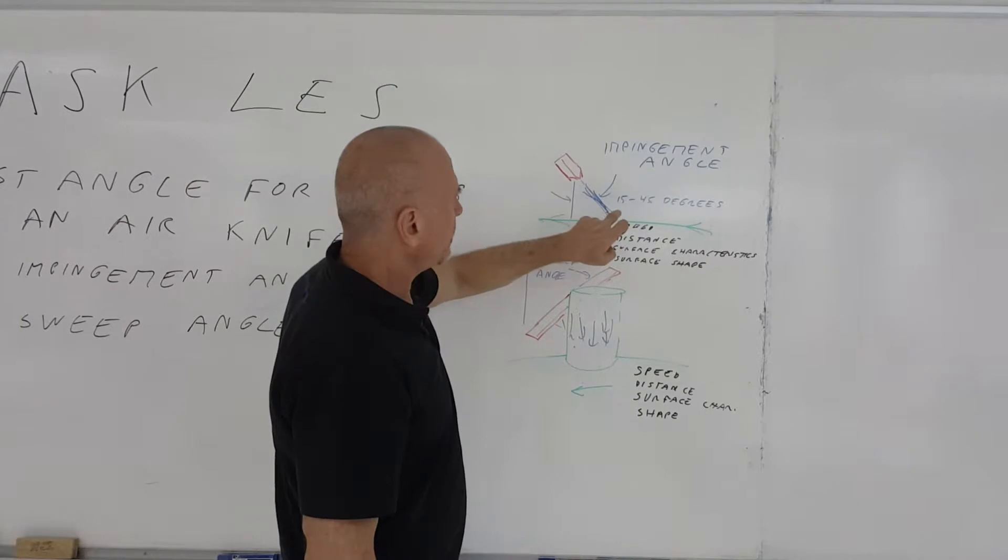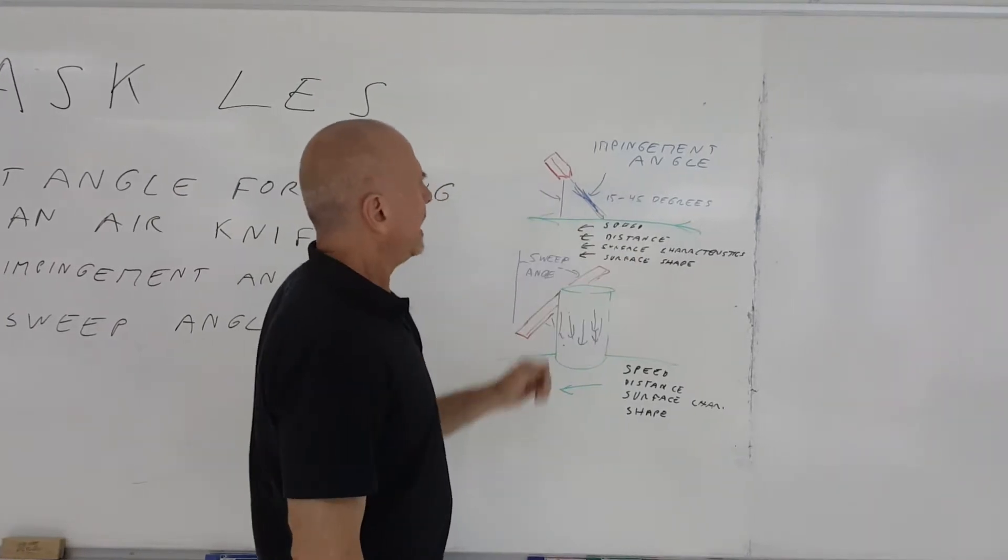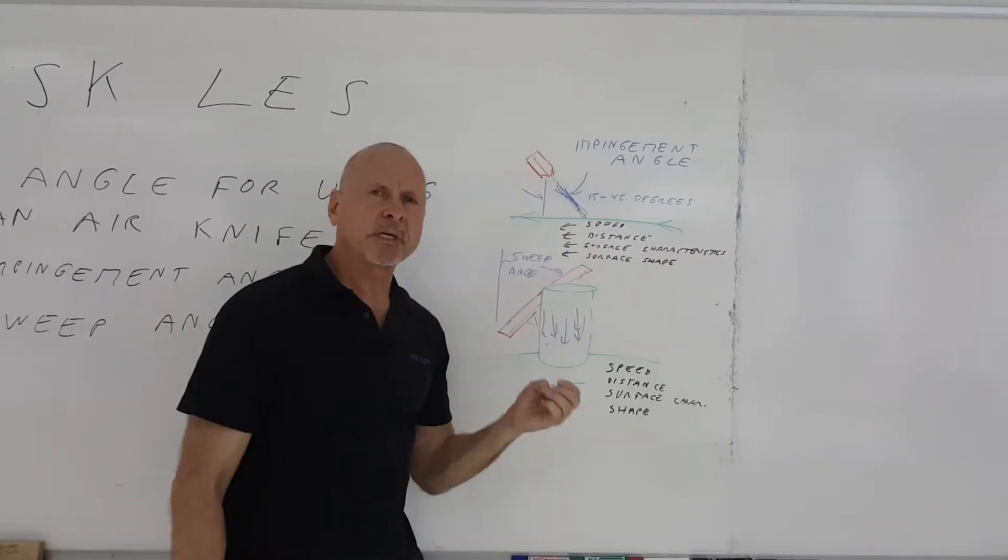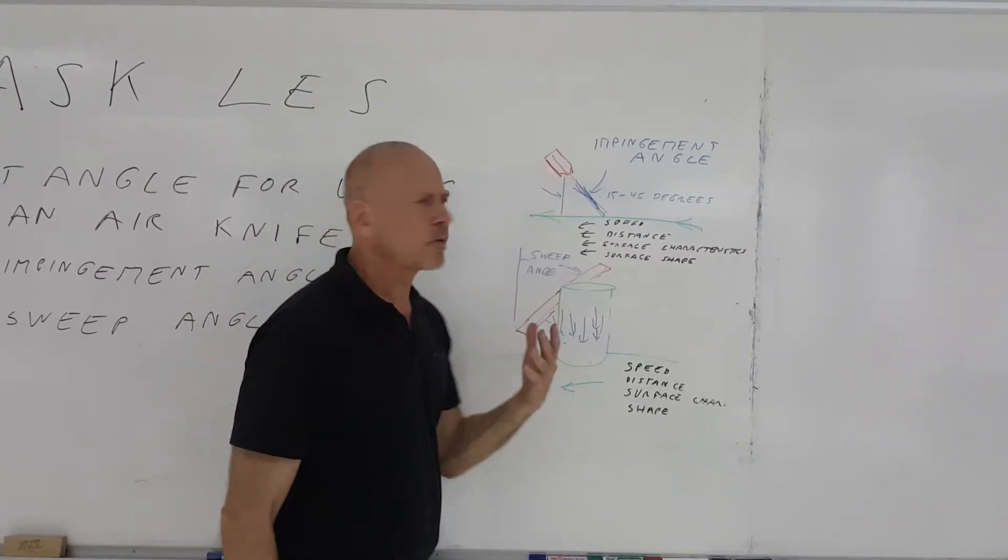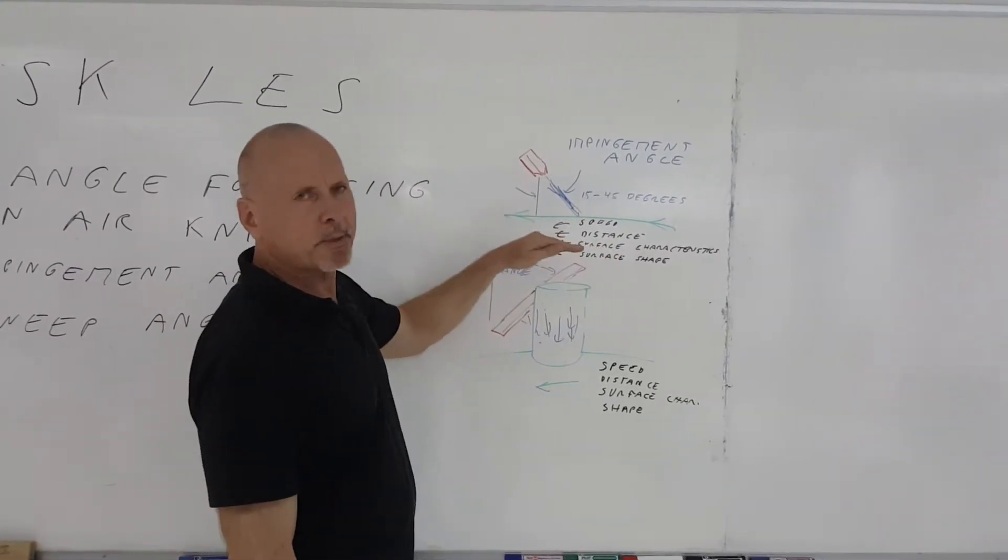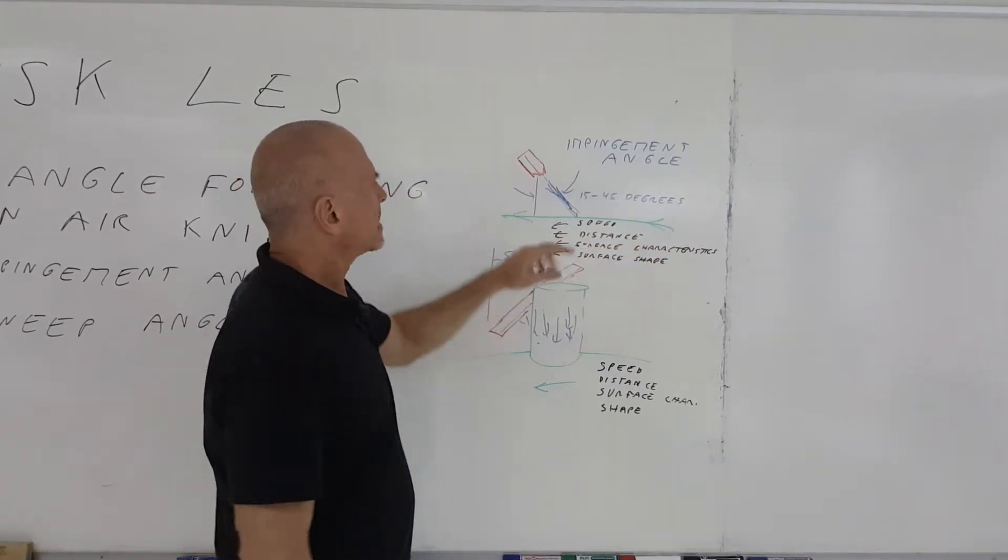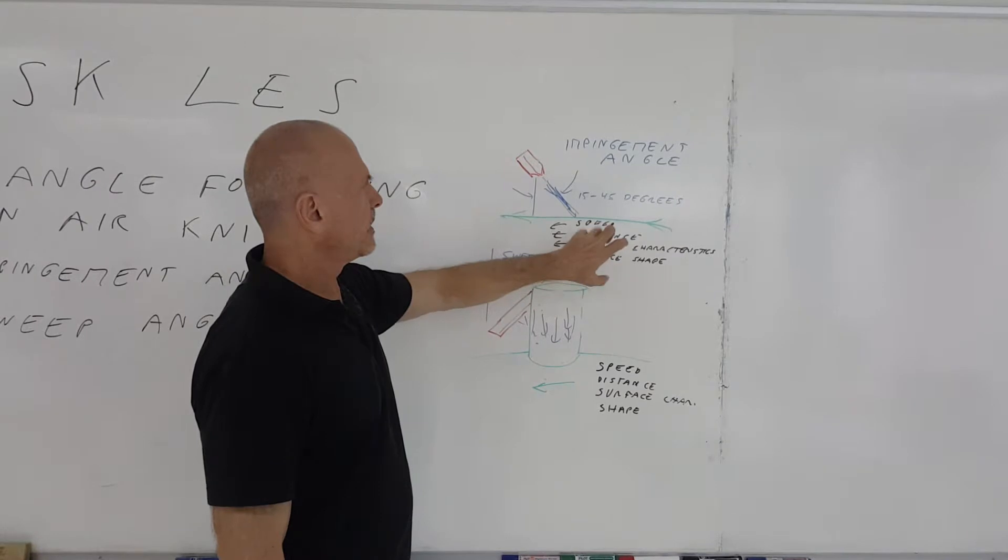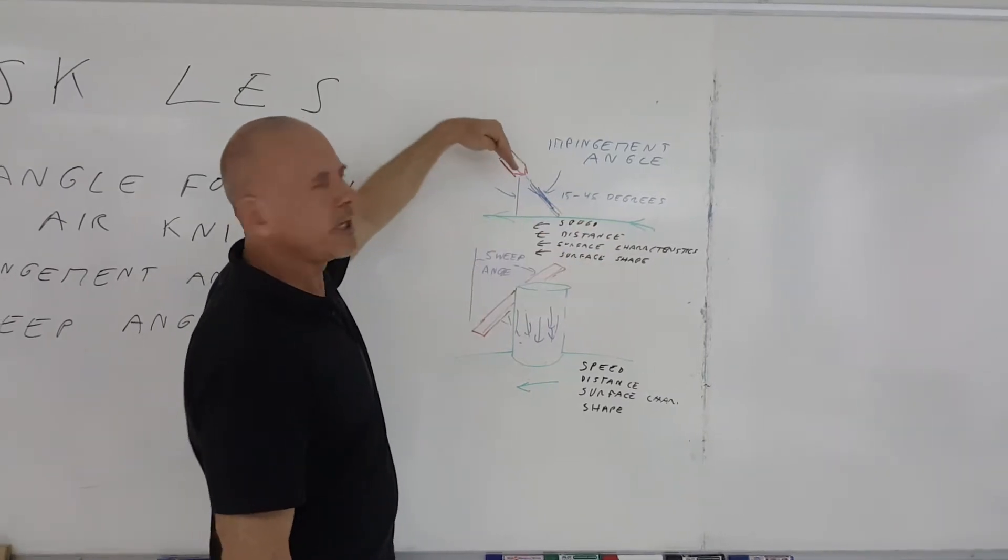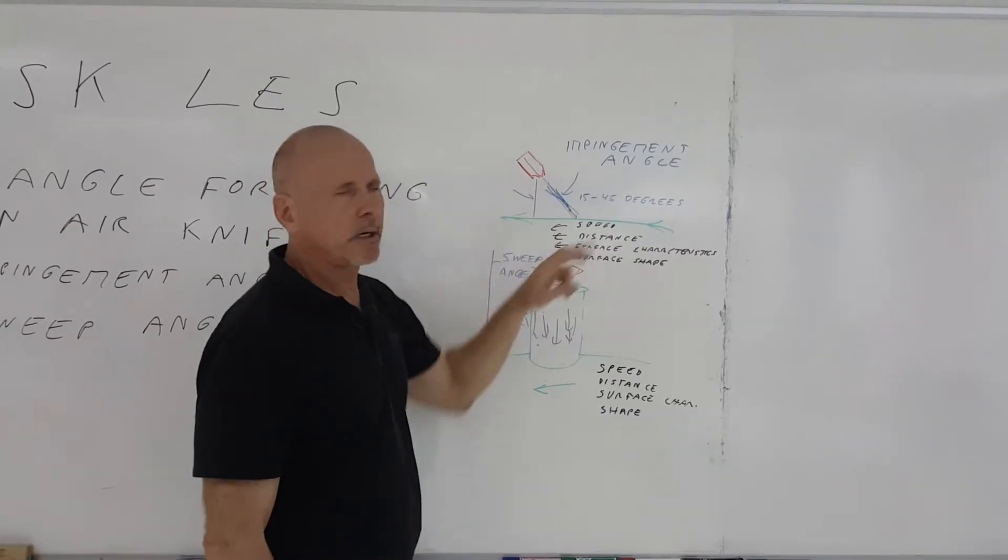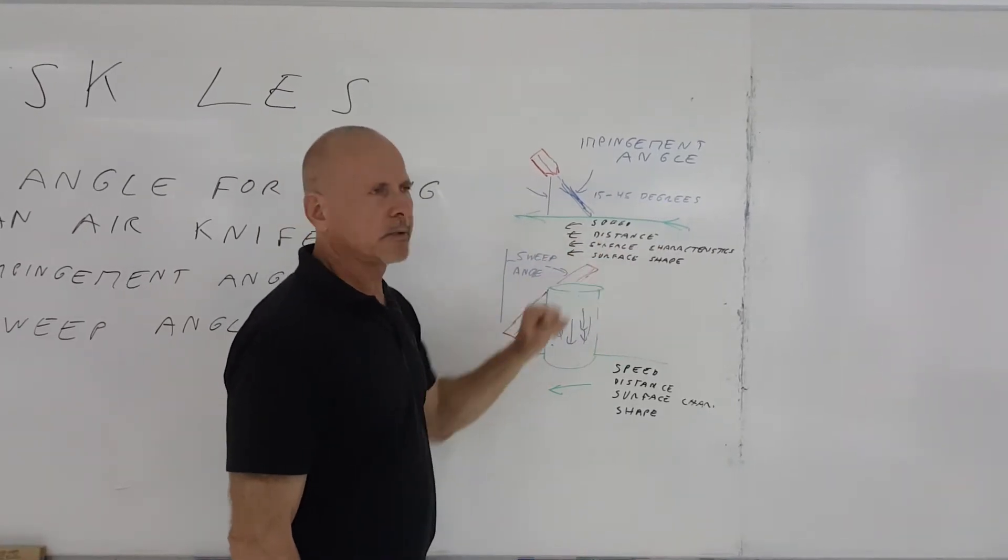That angle should be somewhere between 15 to 45 degrees, and it's going to depend on speed, distance, and surface characteristics. Is it a smooth surface or a rough surface? Also, the shape of the surface - is it bumpy, wavy, or flat? All these different factors are going to affect that impingement angle. So again, the impingement angle should be between 15 to 45 degrees, depending on these particular characteristics.